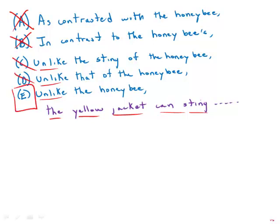And so that means that C and D are both out, and E is the best answer. Notice of course E is also the shortest answer. It's not always the case, but it often is the case that the shortest answer, the most concise answer, is also the correct answer.